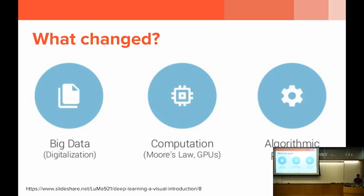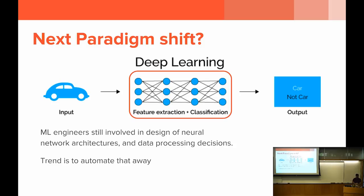One question I get asked a lot is: what's the next paradigm shift about to occur in deep learning? A lot of what ML engineers do is still make engineering decisions about how to design and feature-engineer neural networks — how many layers to have, which optimization algorithm to use, how to choose data augmentation methodologies. All of these are still decided manually, often through heuristics. The trend increasingly in deep learning has been to automate those decisions rather than having engineers decide — letting data make those decisions.